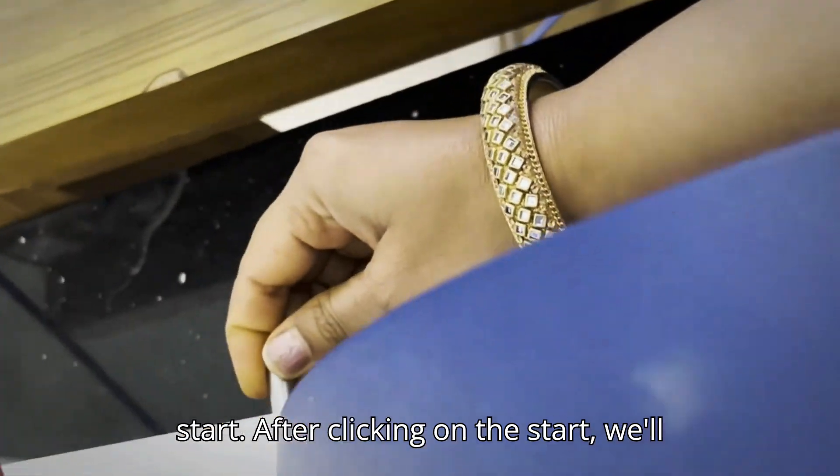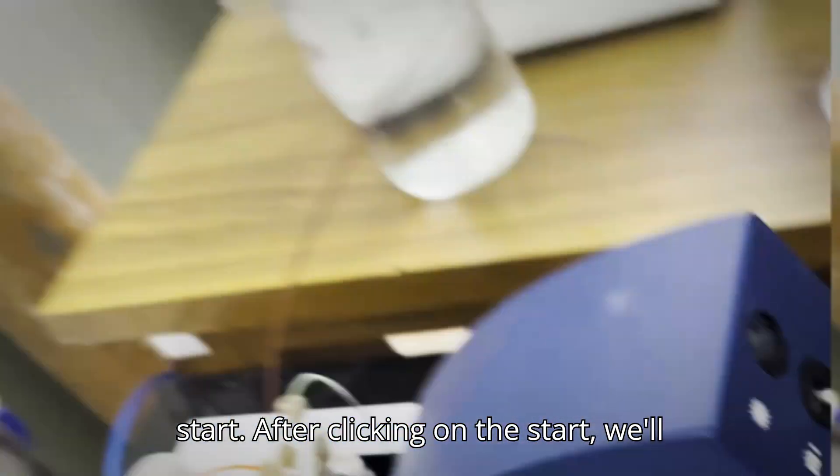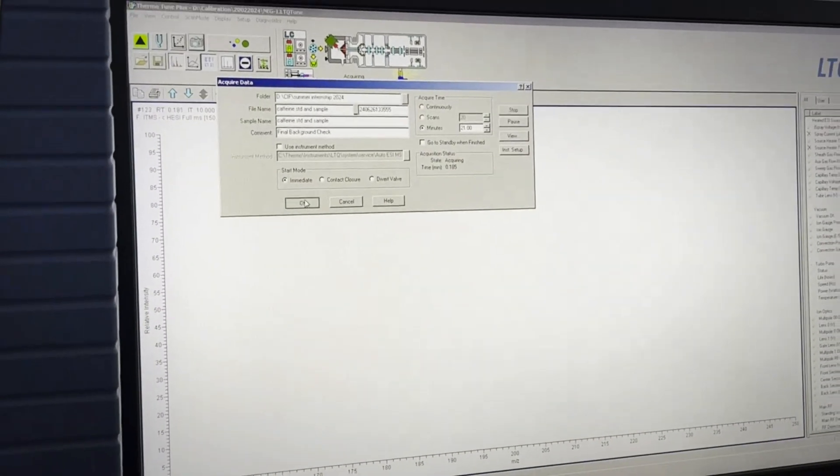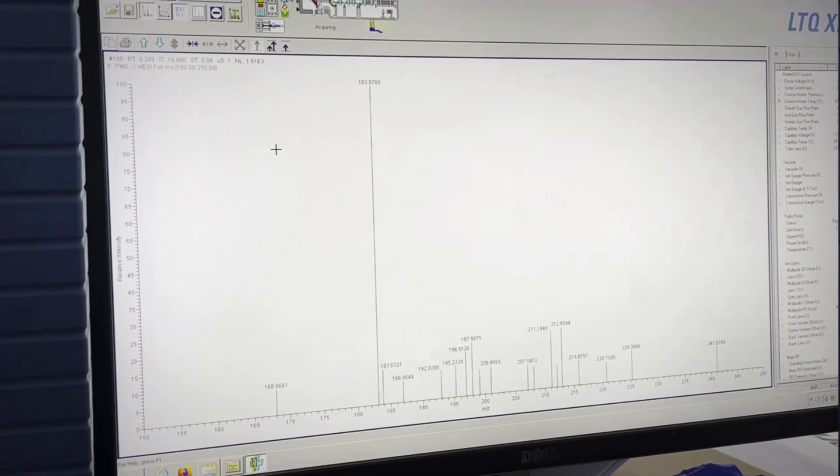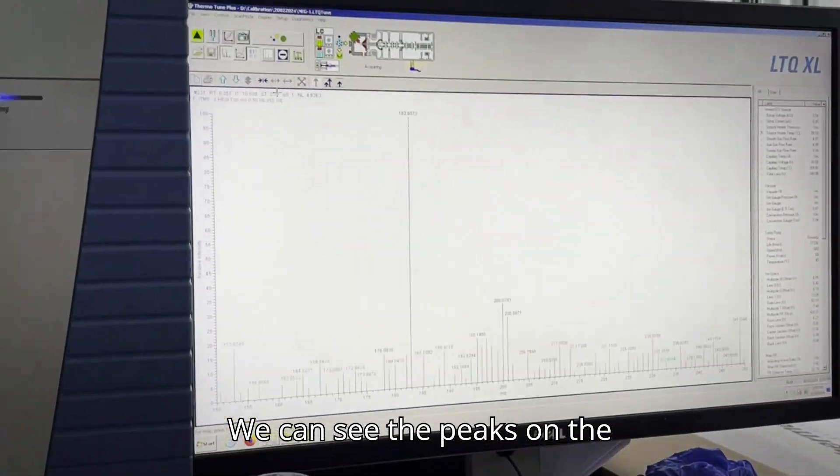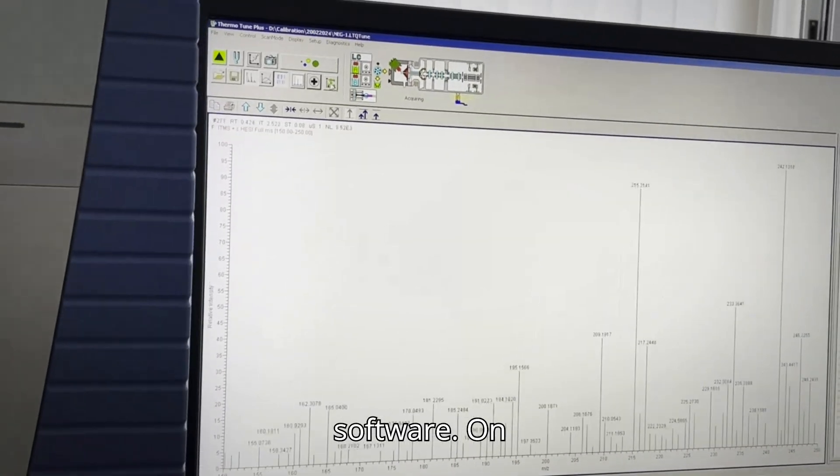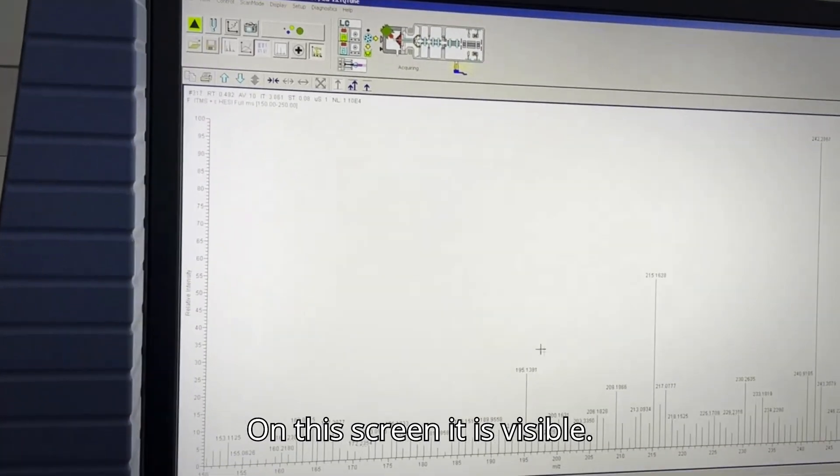Here we can click on the start. After clicking on the start, we will pull the lever. Here we can see the peaks on the software. On the screen, it is visible.